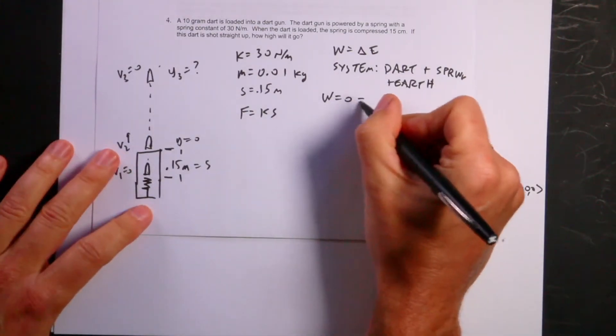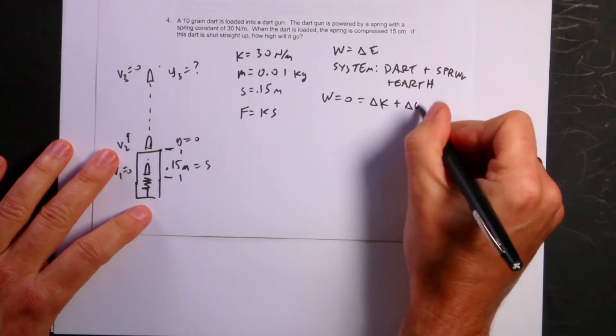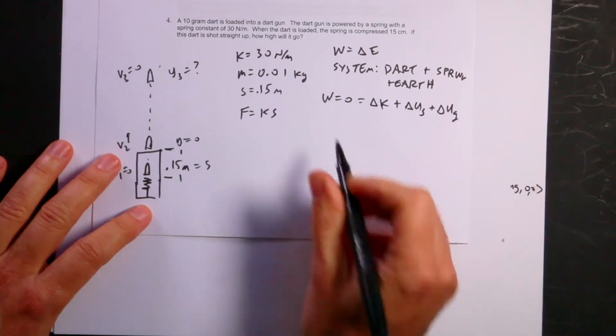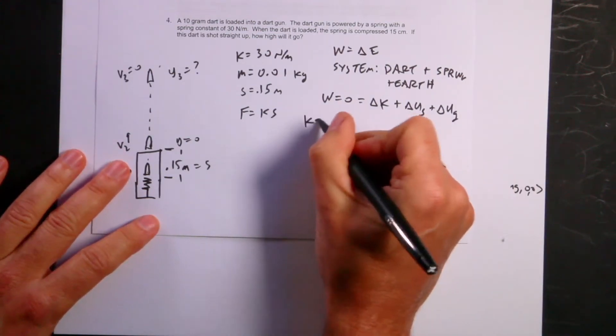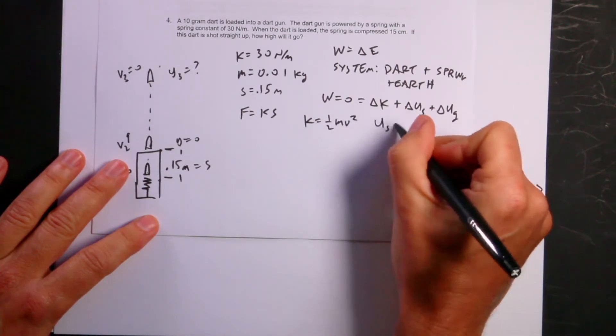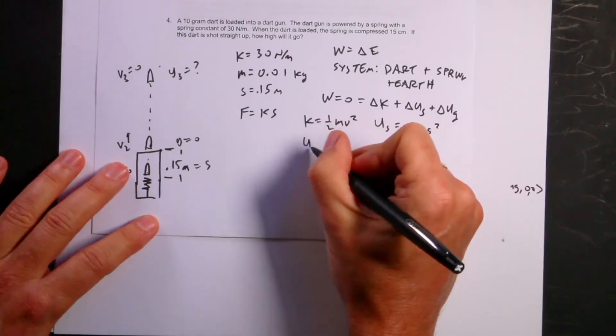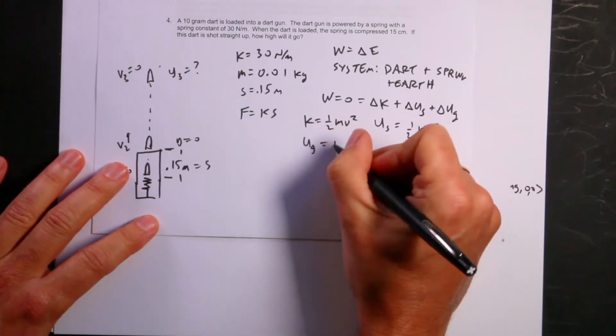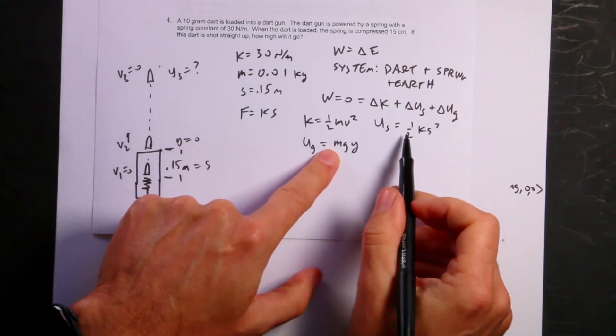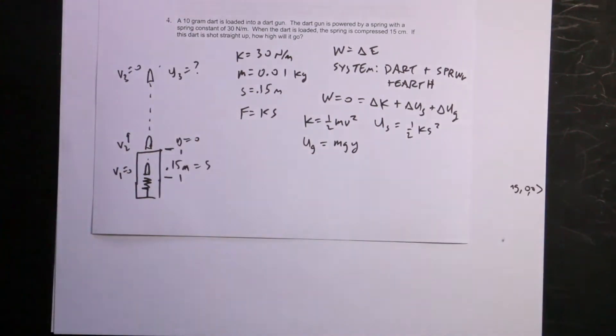So I have zero equals the change in kinetic energy plus the change in spring potential energy plus the change in gravitational potential energy. Since there's a dart in the system, I have changes in kinetic energy. Since there's a spring in the system, I can have changes in elastic potential energy. And because the earth is in there with the dart, I can have change in gravitational potential energy. But nothing is outside of the system that does work.